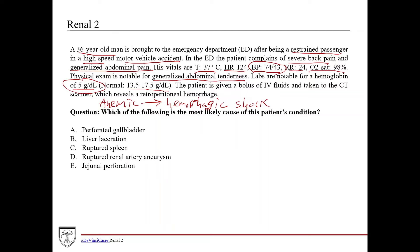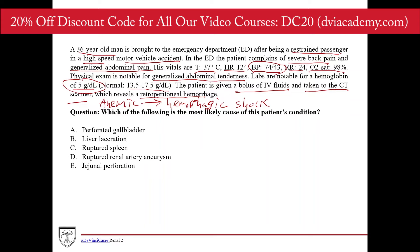Given that he has hemorrhagic shock, he likely has some type of internal injury, whether to an organ, blood vessel, or something like that. We need imaging to find out. First they give him a bolus of IV fluids to help bring his blood pressure back up, and then they take him to the CT scanner, which shows a retroperitoneal hemorrhage. The question is asking: which of the following is the most likely cause of this patient's condition? This is really an anatomy question — which of these structures is retroperitoneal and likely to cause a retroperitoneal hemorrhage in a trauma situation.